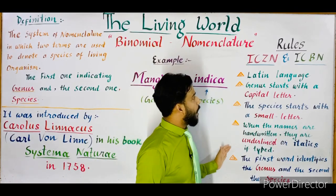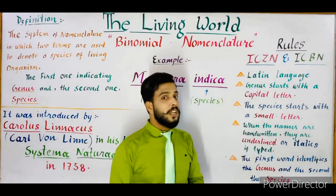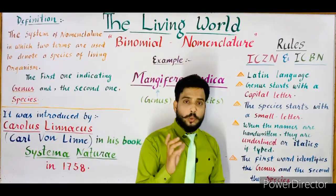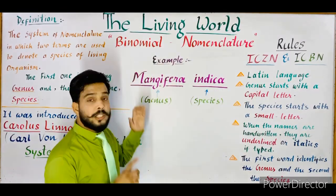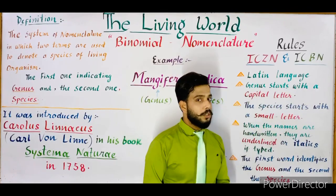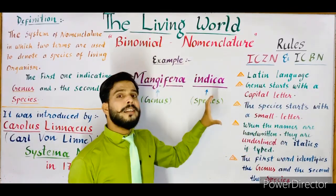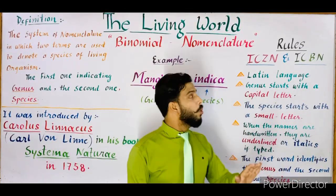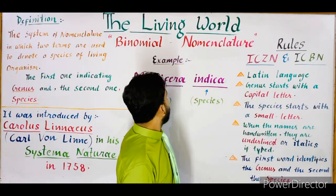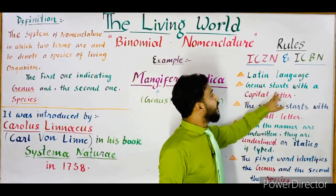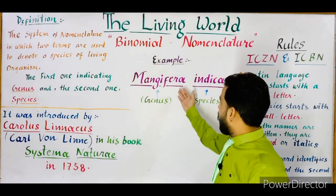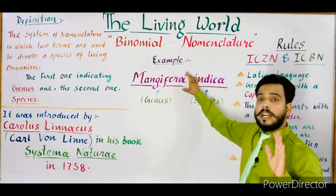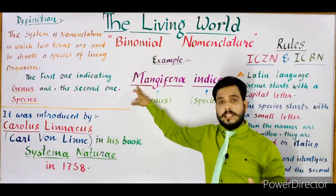ICZN and ICBN have proposed rules to write a scientific name according to binomial nomenclature. The first rule is that the scientific name is always written in Latin language. Latin is used because it is a dead language — there is no updation in this language, everything remains the same. The next rule is that the genus always starts with a capital letter. As you can see in the example Mangifera indica, the genus Mangifera starts with a capital M.